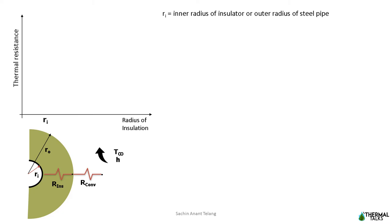For better understanding, let me represent the effect of thermal resistance with respect to insulation thickness — in this case, the radius of insulation. As thickness of insulation increases, that is Ro increases, insulation resistance increases. But convective resistance decreases.